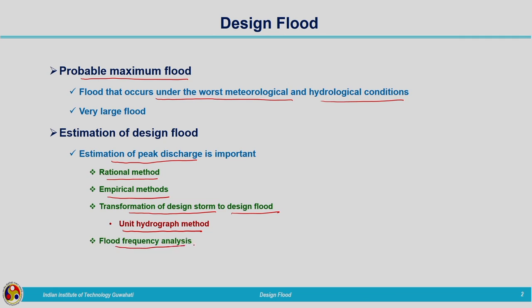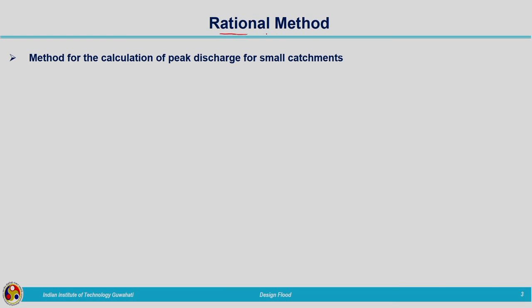The next method is flood frequency analysis. We have seen different methods including probability plotting and Gumbel's method. The same methods will be used here for finding out the design flood. Different methods of estimation of floods include the rational method, some empirical formulas, the unit hydrograph method, and flood frequency approaches.